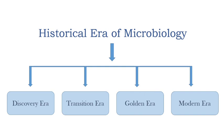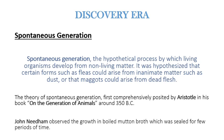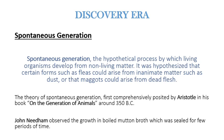The time of discovery in microbiology is well separated into four eras: the discovery era, transition era, golden era, and modern era. Spontaneous generation is a term that first arises in the discovery era. Spontaneous generation is a hypothetical process by which living organisms develop from non-living matter — for example, that flesh could arise from dust, or that maggots could arise from dead flesh.